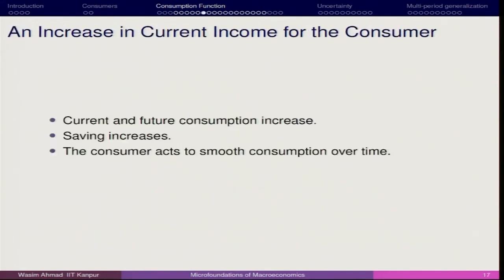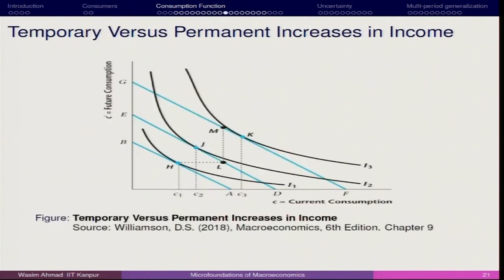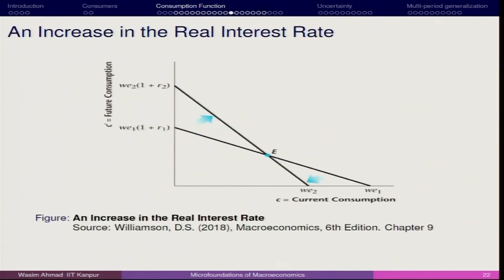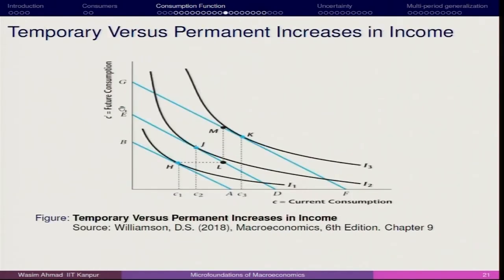We also discussed about the temporary and permanent income. Now we will be talking about the interest rate scenarios. Here, if you see, the budget line is shifting almost parallelly — it is a parallel shift — which means that the slope of the budget line does not change. The slope is -(1+r). Once I say the slope of the budget line does not change, it means there is not much impact on the current and future period consumption. But if there is any change in the interest rate, this will be reflected in your current and future period consumption.